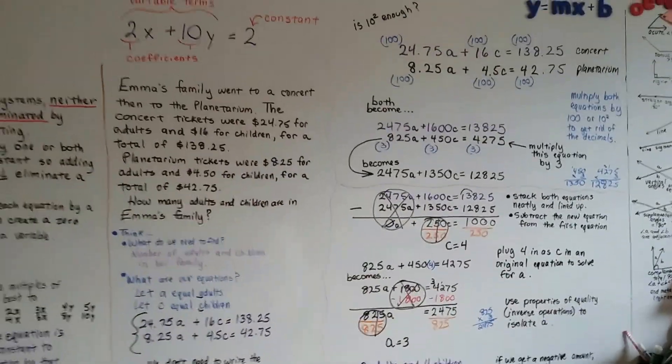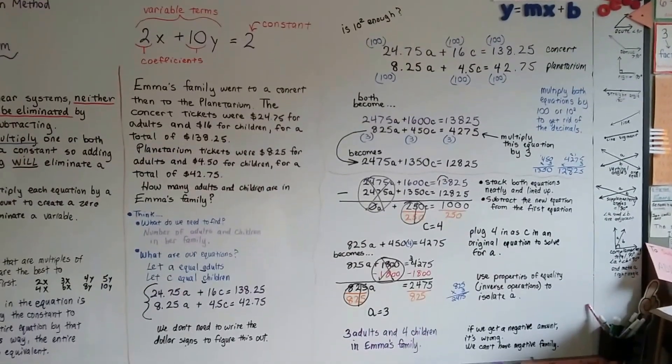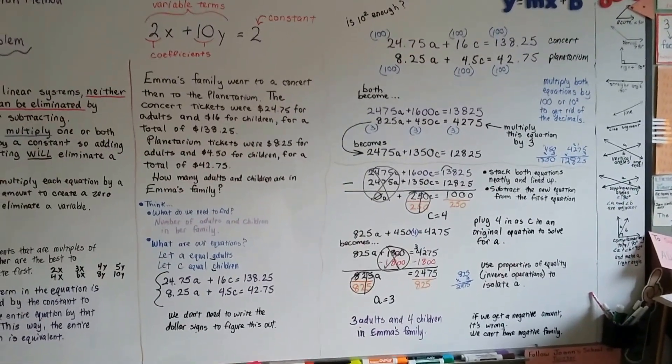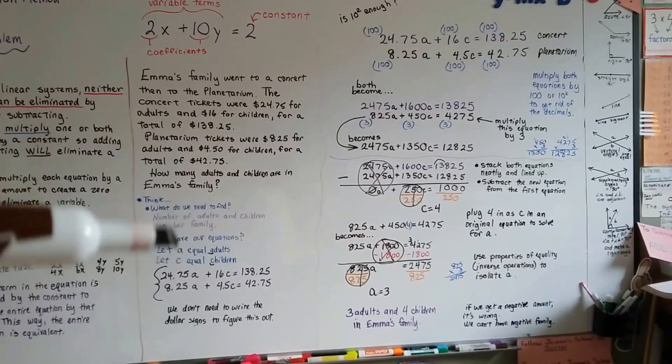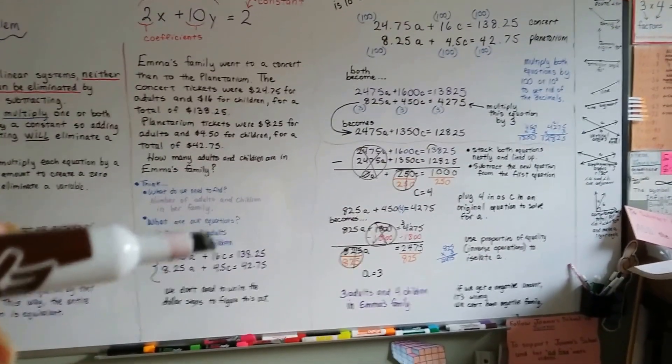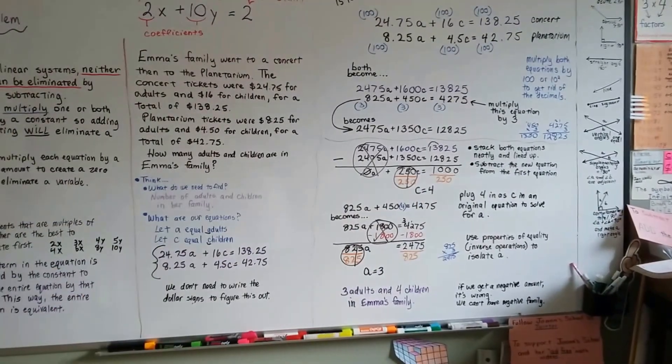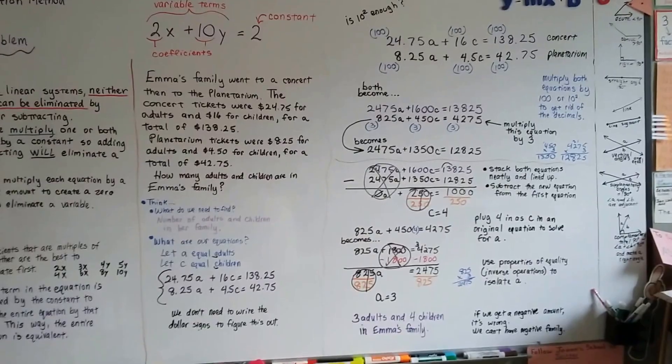Don't forget, you have to multiply by a power of 10 to get rid of decimals to make your life easier. And you can use variables that match the word problem like A for adults or C for children. Then it's easy to remember what they stood for instead of just X and Y.